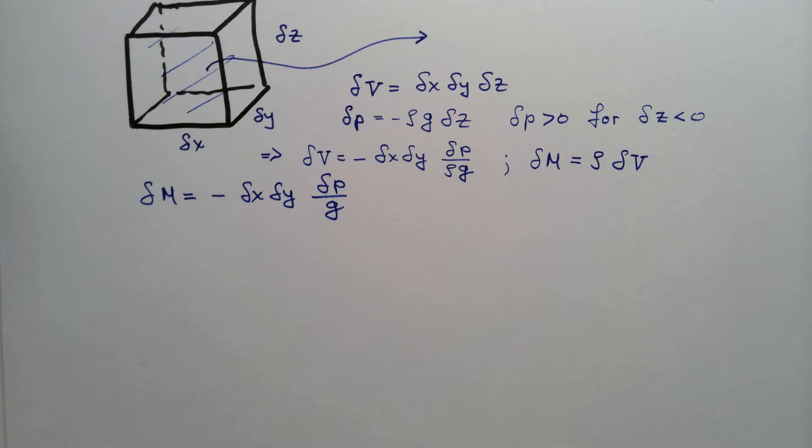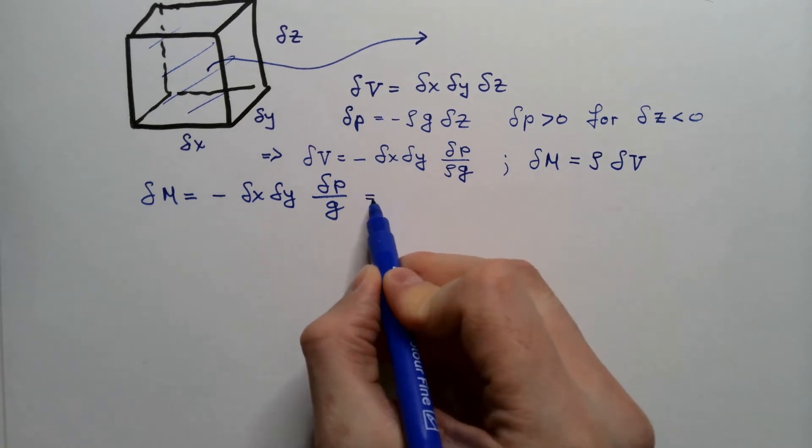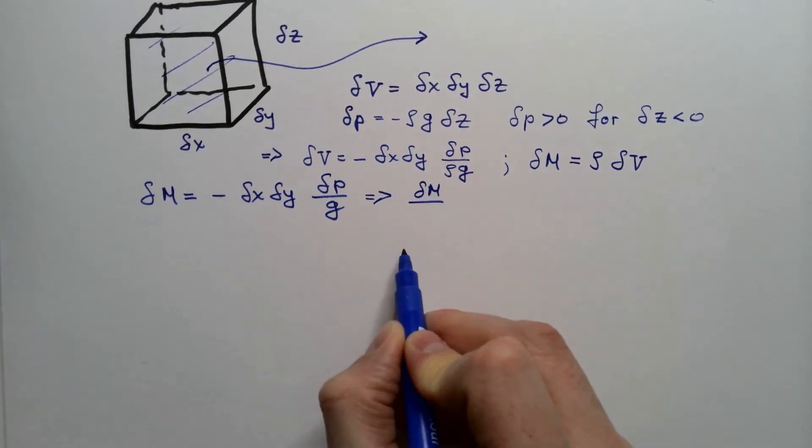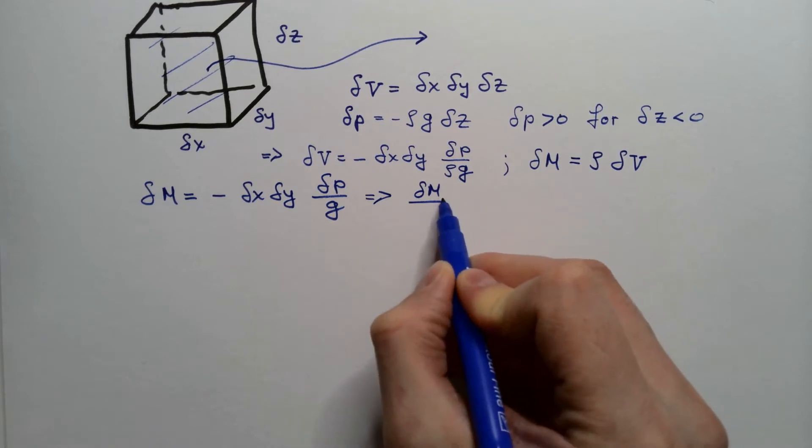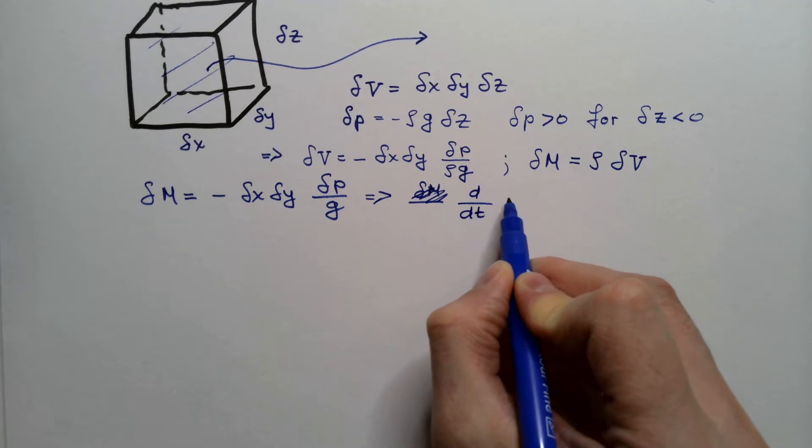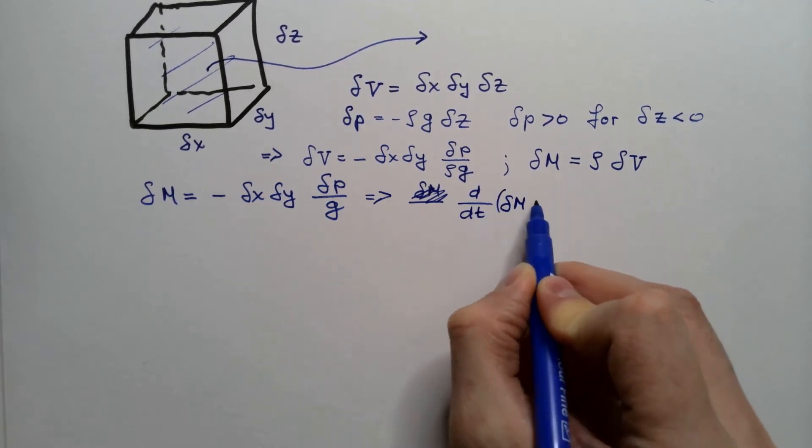However, we also know that mass must be conserved if we neglect some nuclear reactions, which means that d dt of delta m needs to be zero.